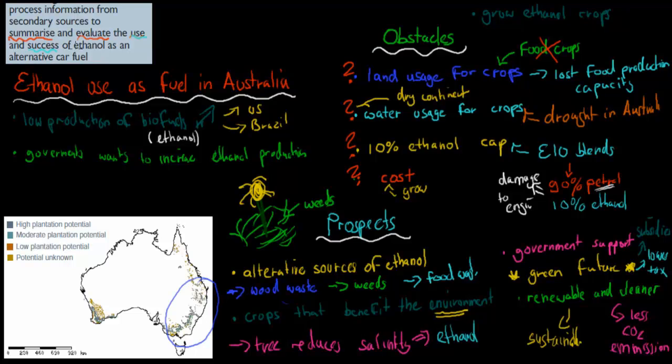And if we have to evaluate the success at the moment, we have some usage of ethanol in Australia, but overall, it's still quite low. But we do see that prospect of new technologies coming around that could really change the production of ethanol in the future. But if these technologies are not around, if things don't change, then ethanol probably will not be used to a high degree in Australia, because of these obstacles that we mentioned earlier, such as land use that could be used for food crops, water usage that could be used for food crops instead of ethanol crops. We have that 10% ethanol cap and the cost as well, so it costs more.